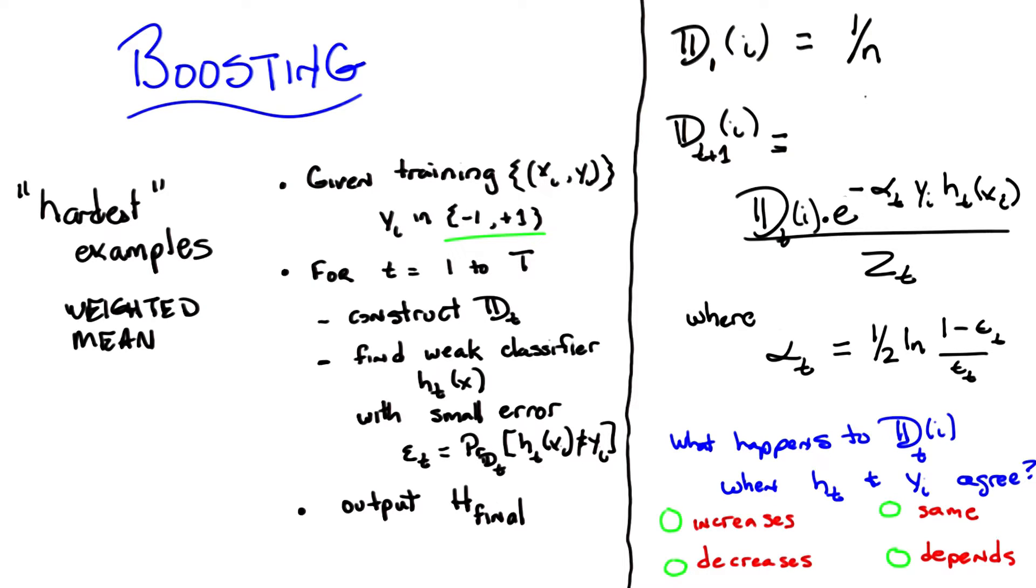What happens to the distribution over a particular example i when the hypothesis ht that was output by the example agrees with the particular label y sub i?